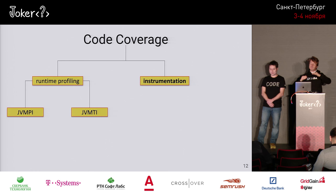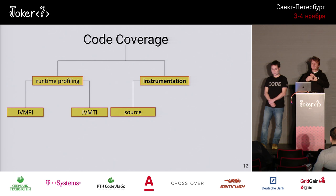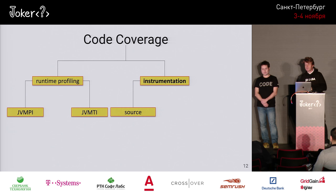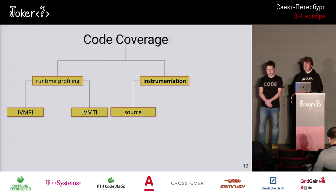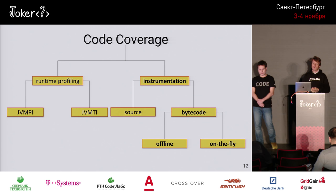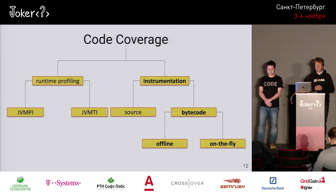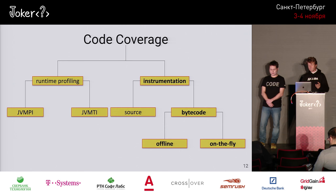With instrumentation, the idea is that you actually modify the application under test to record which parts have been executed. You can cut in at the source level — for example, transforming Java source code to add block statements, as Clover from Atlassian does, which was recently open-sourced. What we actually do is work directly on the bytecode, which is a very handy format once you get used to it. We have two approaches: one is to physically transform class files or JAR files before you start your application; the other is to do it on the fly, in memory.